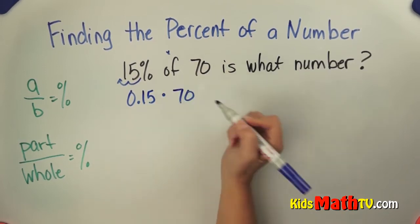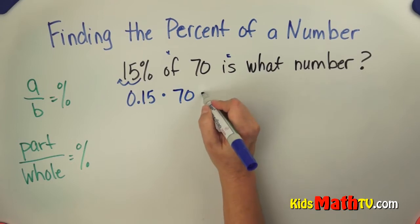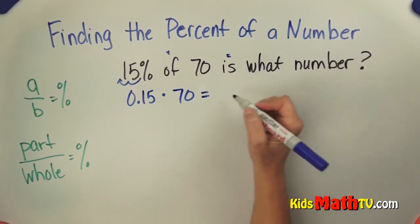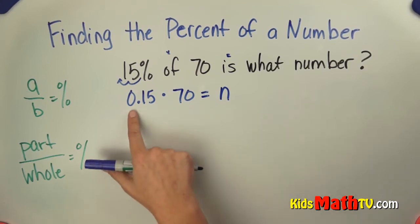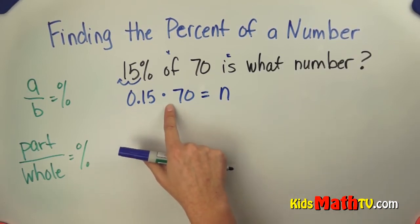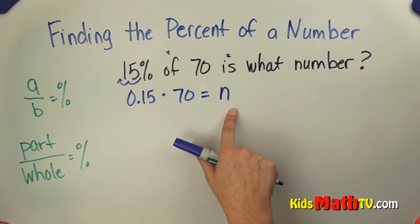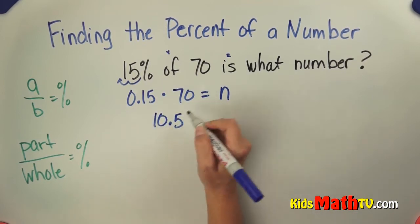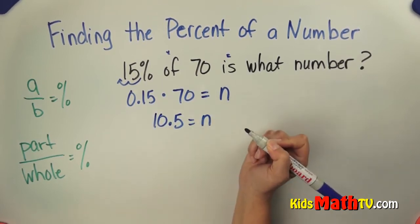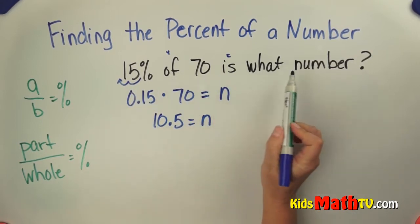70 is simply 70, is means equal, and what number? We can use a variable. I'll use n. So now we have 15 hundredths times 70 equals n. So now if we multiply that, we get 10 and 5 tenths equals n. So 15% of 70 is what number?